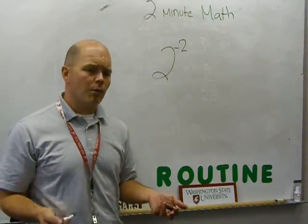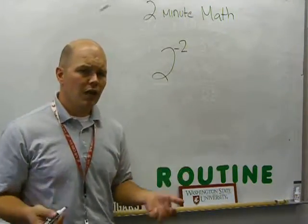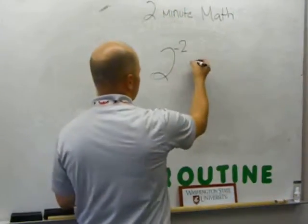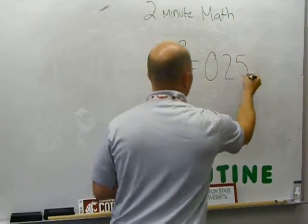And if you remember right, we tested that by seeing what that actually is equal to when we put it into a calculator, and we found out that two to the negative second power is equal to 0.25.